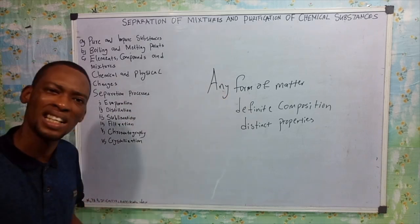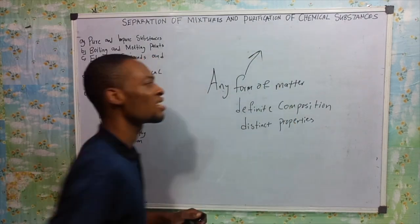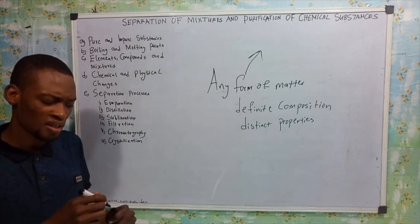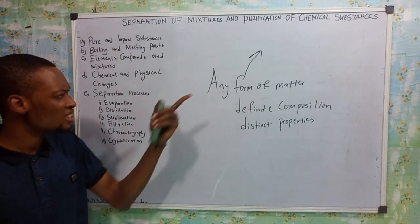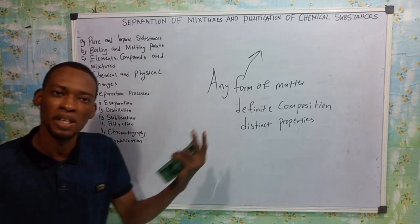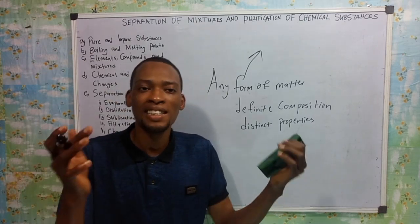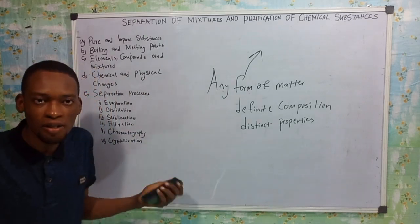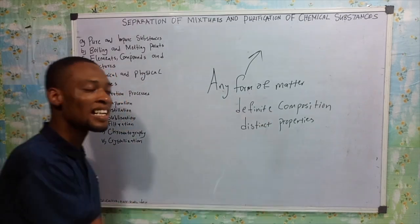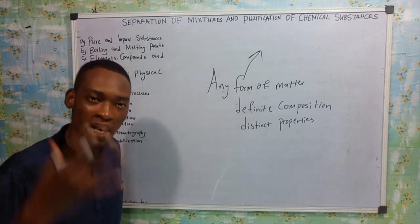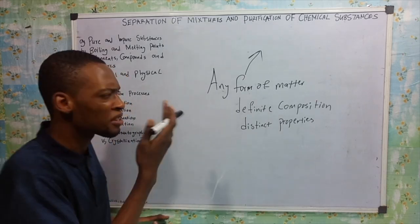Now, form of matter — so it means matter exists in different forms. But before we go into the forms of matter, let's discuss matter. What is matter? So matter in this case is not talking about discussion or gossip. Matter is anything that has mass and occupies space. That's matter for you.